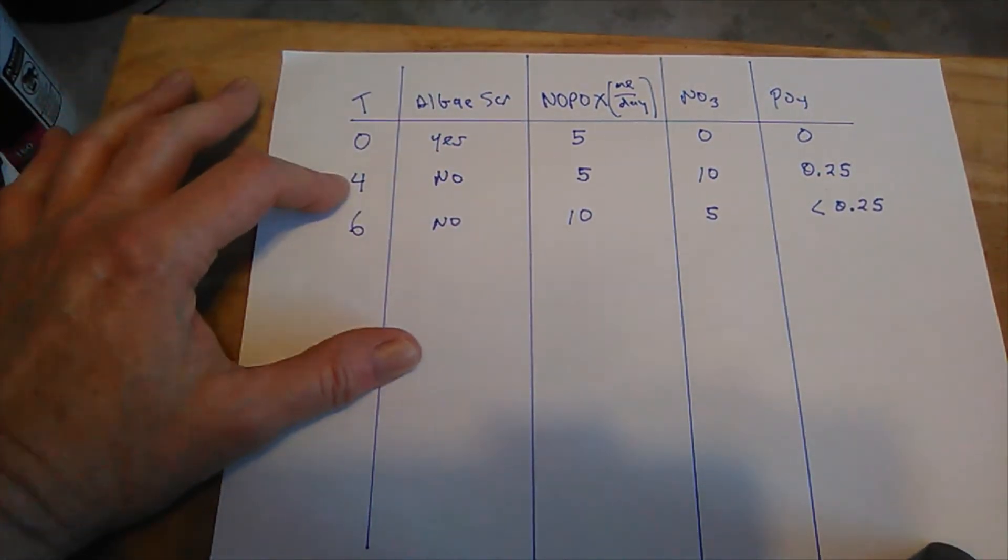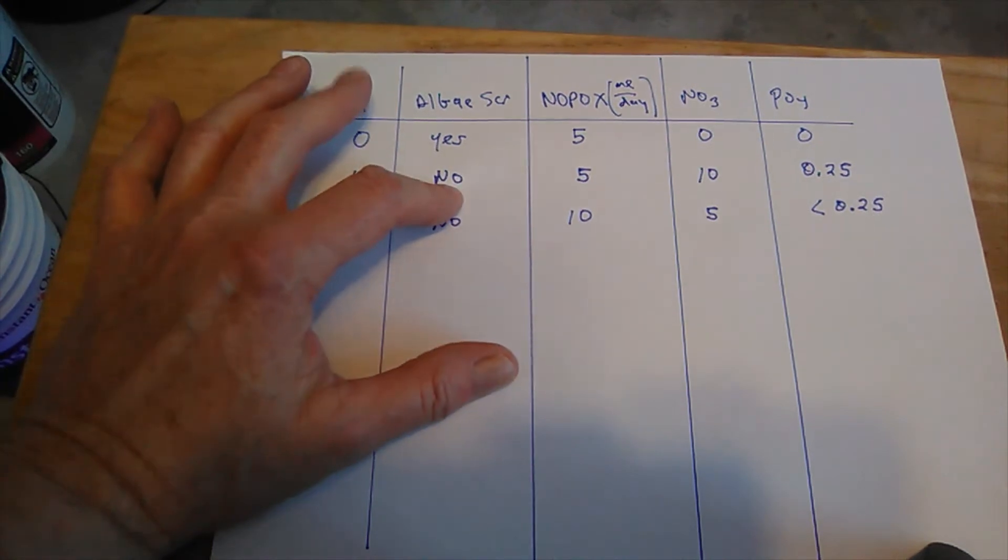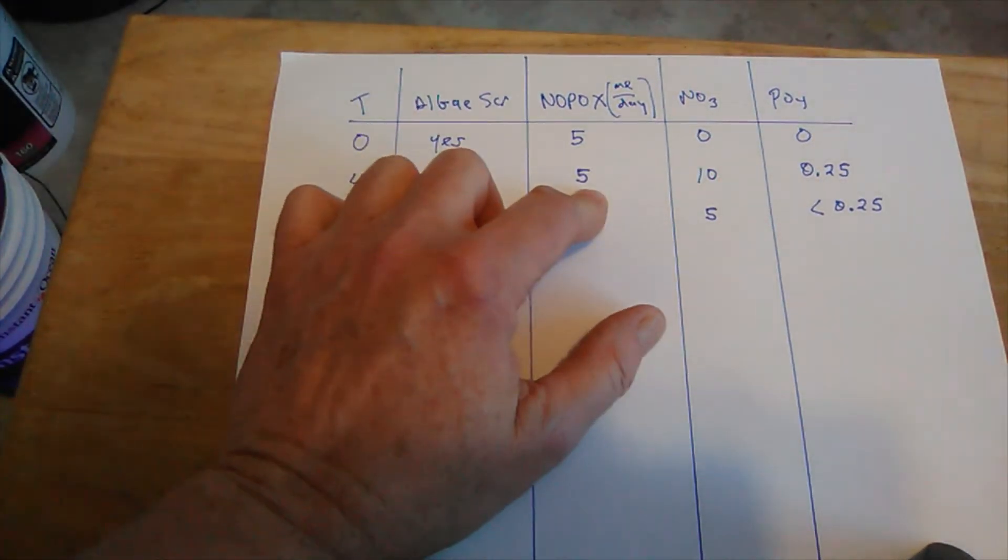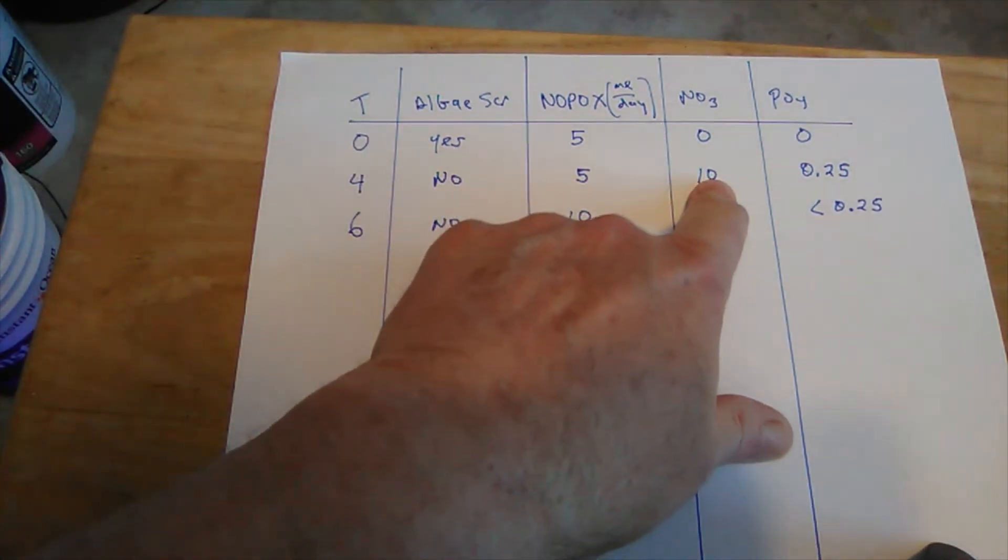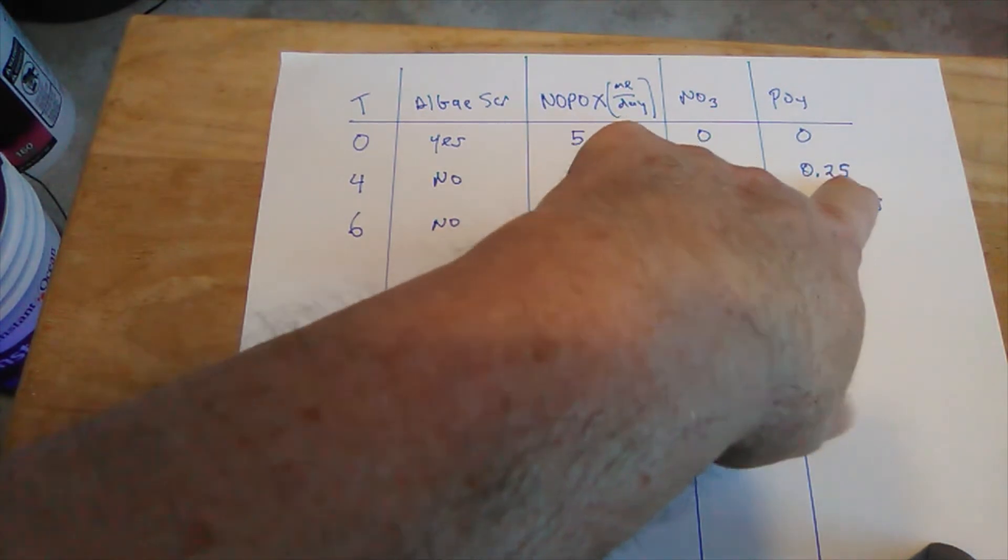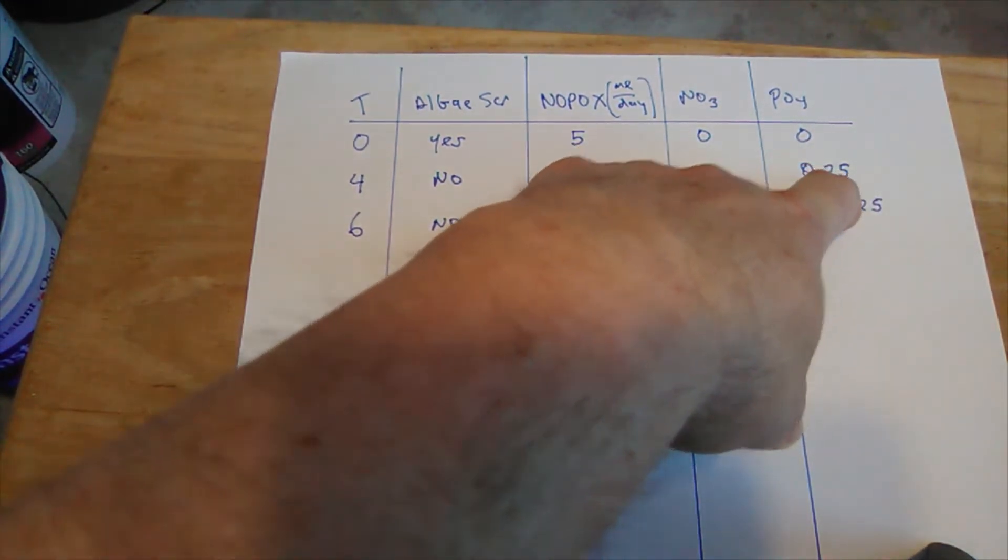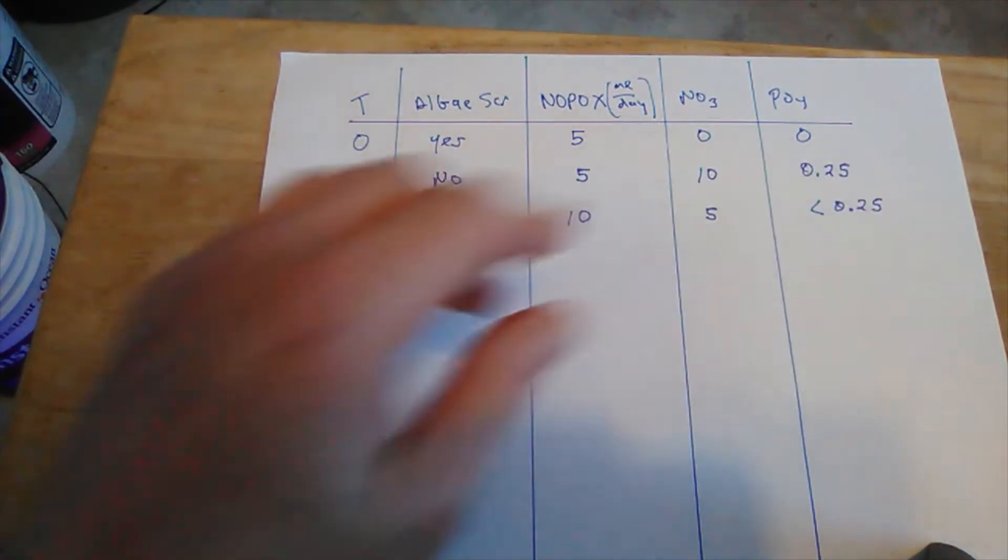So from zero to four weeks, there was no algae scrubber and I was still dosing 5 milliliters per day of NOPOX. At the end of that four weeks, the nitrates went up to 10, the PO4 went up to 0.25. I started seeing green algae all over the tank.